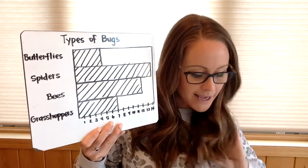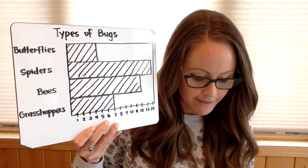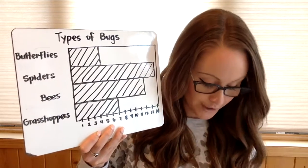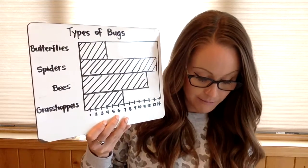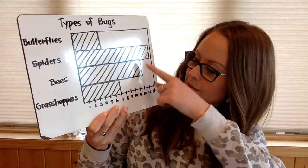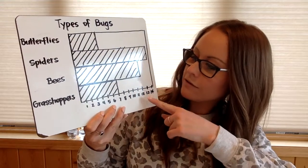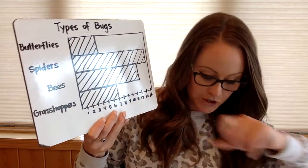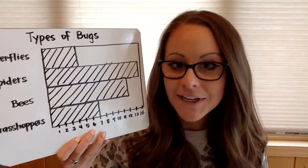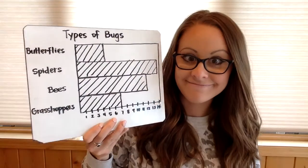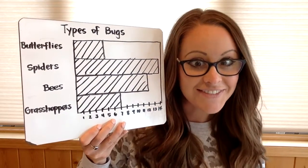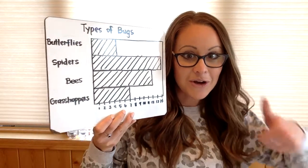Letter B: how many more bees than grasshoppers were counted in the park? You're going to be comparing bees, which is 12, and grasshoppers, which is 7. What is 12 minus 7? Five is correct.